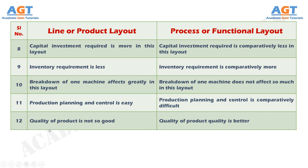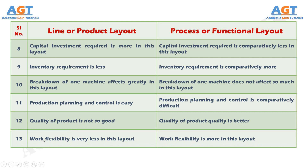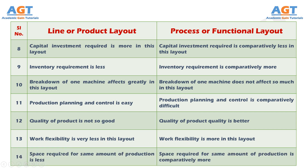Number 12: In product layout, quality of product is not so good, whereas quality of product is better in process layout. Number 13: In product layout, work flexibility is very less, whereas work flexibility is more in process layout. Number 14: In product layout, space required for the same amount of production is less, whereas space required is comparatively more in a process layout.